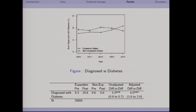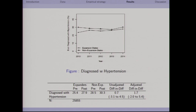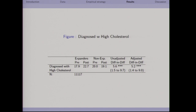Our last set of outcomes relates to being diagnosed with chronic illnesses — something people speculated could be a source of improved health if individuals had undiagnosed conditions. For diabetes diagnoses, we find significant relative increases in expansion states of about 3 to 4.5 percentage points. For hypertension, we find positive point estimates but wide confidence intervals, so we can't say much. For cholesterol, the question was only asked in 2012 and 2014, giving us just two data points, but if our model assumptions hold we can say there was a relative increase in diagnoses.